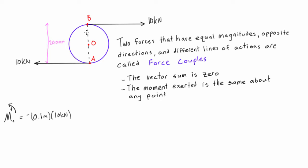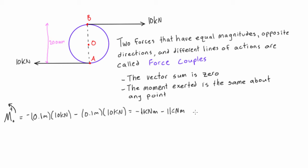Looking at the top force, the moment it creates about O is exactly the same: 0.1 meters times 10 kilonewtons, and it also causes clockwise rotation about O, so that's another negative moment. Adding them together: negative 1 kilonewton·meter minus 1 kilonewton·meter gives us a final answer of negative 2 kilonewton·meters.